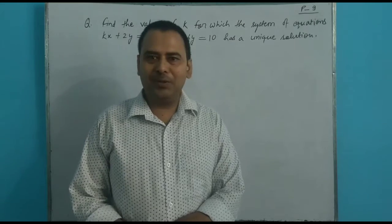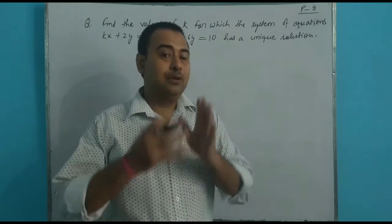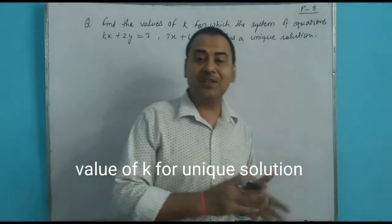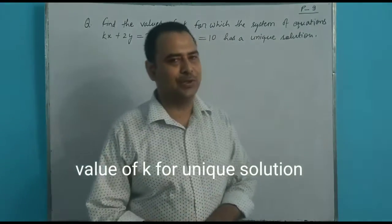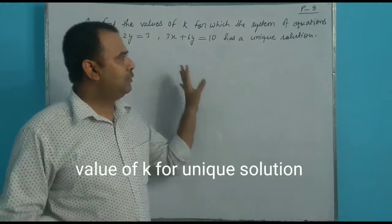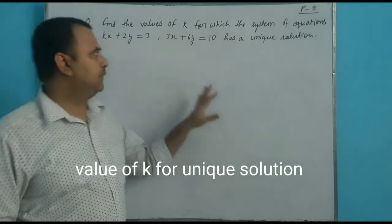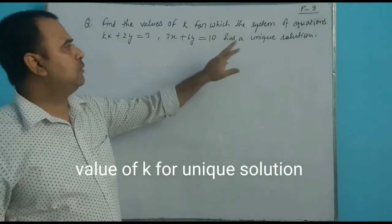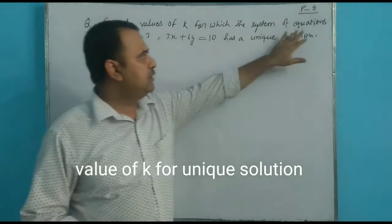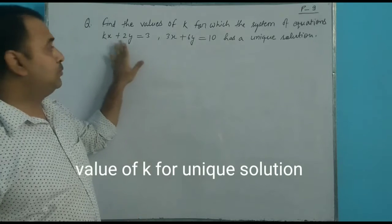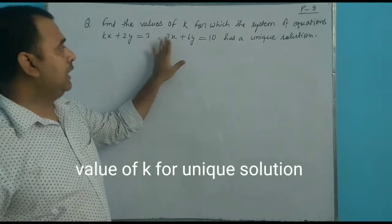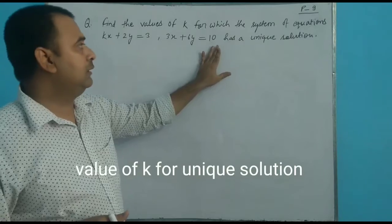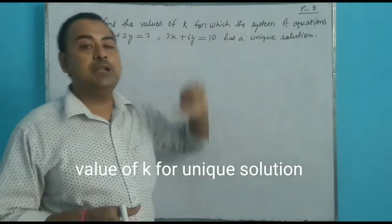In this video we are going to solve a question based on consistent or inconsistent solutions. Find the value of k for which the system of equations kx plus 2y equals 3 and px plus 6y equals 10 has a unique solution.